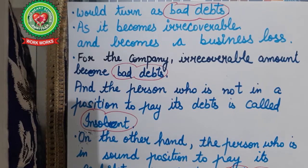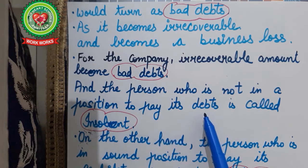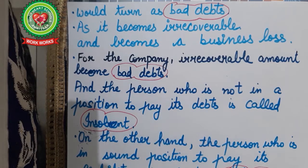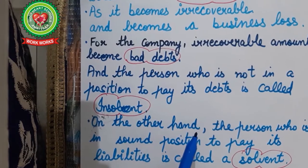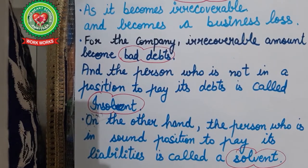A person who is not able to pay his debts — whose business is running at a loss, not earning profit — is called an insolvent. On the other hand, a person whose business is running smoothly, who has good credit worthiness and market reputation, and who always clears his liabilities, is called a solvent person.